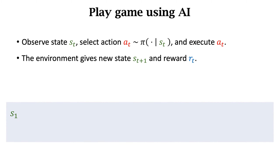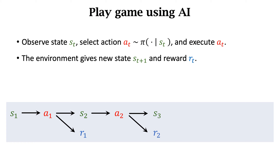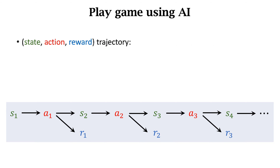Given the first state s1, the policy makes a decision a1 and the agent executes a1. Then the environment updates the state to s2 and provides the agent with reward r1, which indicates how good the action is. Based on s2, the policy makes decision a2 and the agent executes a2. The environment updates to s3 and provides reward r2. Then the policy makes decision a3 and the agent executes a3. The environment updates to s4 and provides reward r3. This process continues to the end of the game, and we obtain a trajectory containing all the states, actions, and rewards.